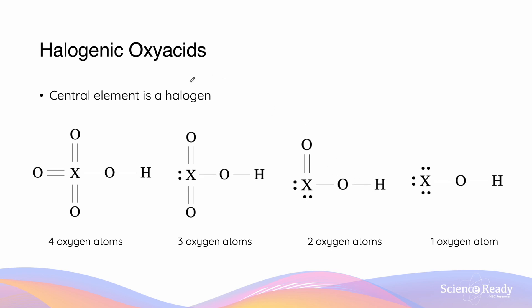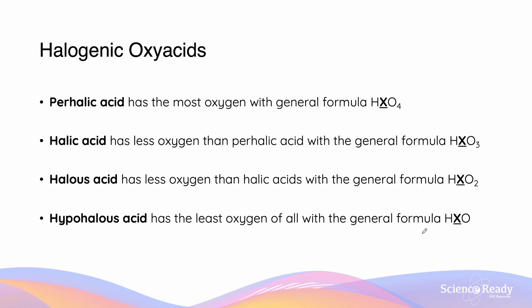Oxy acids can also be halogenic. These kinds of acids occur where the central element of the acid is a halogen. Their structures are demonstrated with four oxygens, three oxygens, two oxygens, and one oxygen. Halogenic oxy acids follow the following nomenclature: for the most oxygen with formula HXO4 where X is our halogen, we give it the name perhalic acid. For HXO3 we call it halic acid, for HXO2 we call it halous acid, and for HXO we call it hypohalous acid.